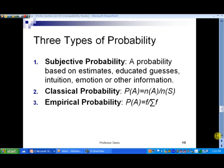And then finally, in slide number 13, just wanted to review here. We talked about the last two types of probability, classical and empirical. There's also one more, really. It's called subjective probability. The probability is based on estimates, educated guesses, intuition, emotion, or other information.